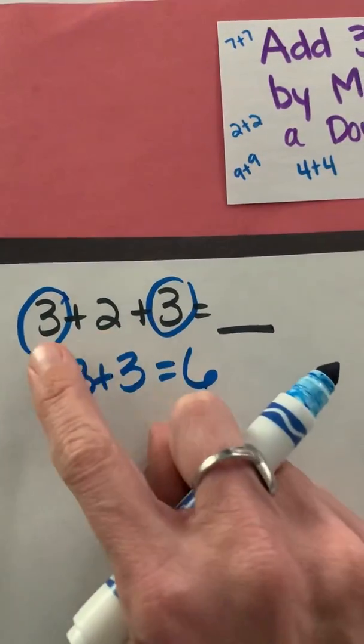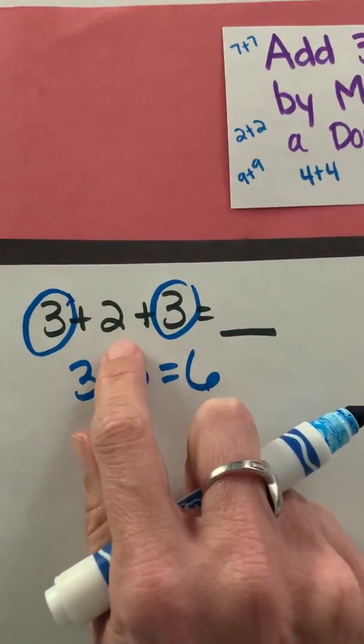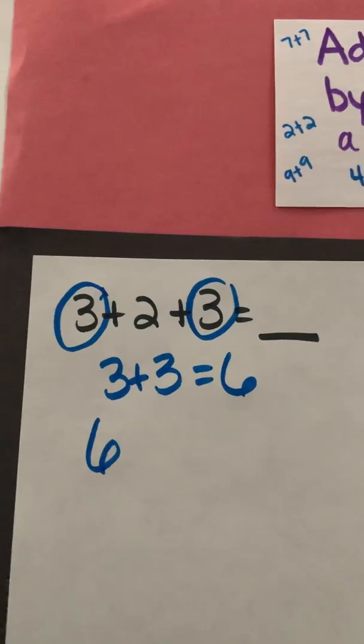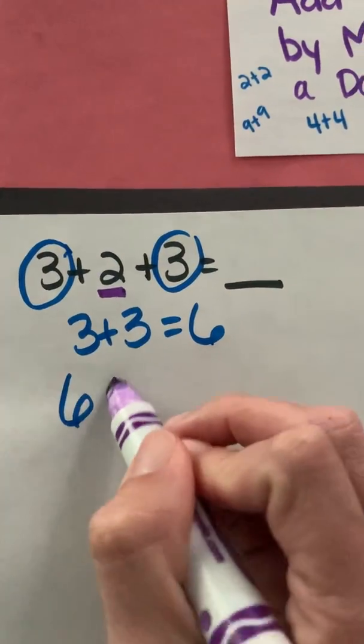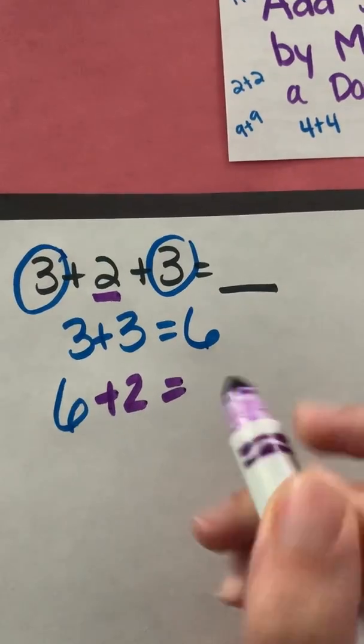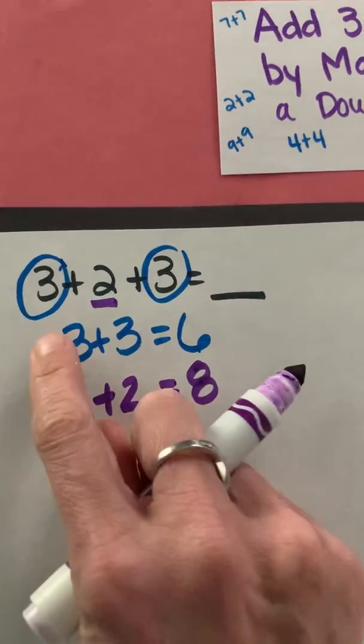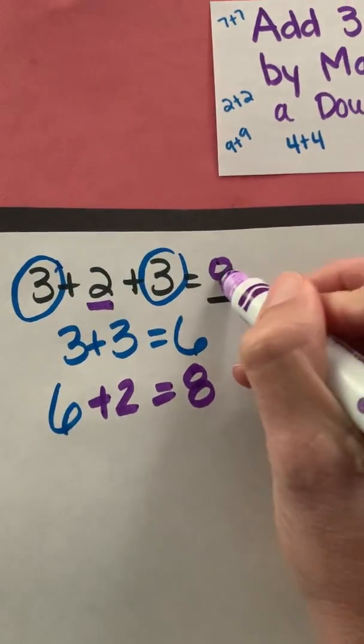Now I'm not done because I've only added two of my addends. I still have to add in the third addend. So now I'm going to take my 6 and I'm going to add in this 2, which then gives me 6, 7, 8. So the sum of 3 plus 2 plus 3 is 8.